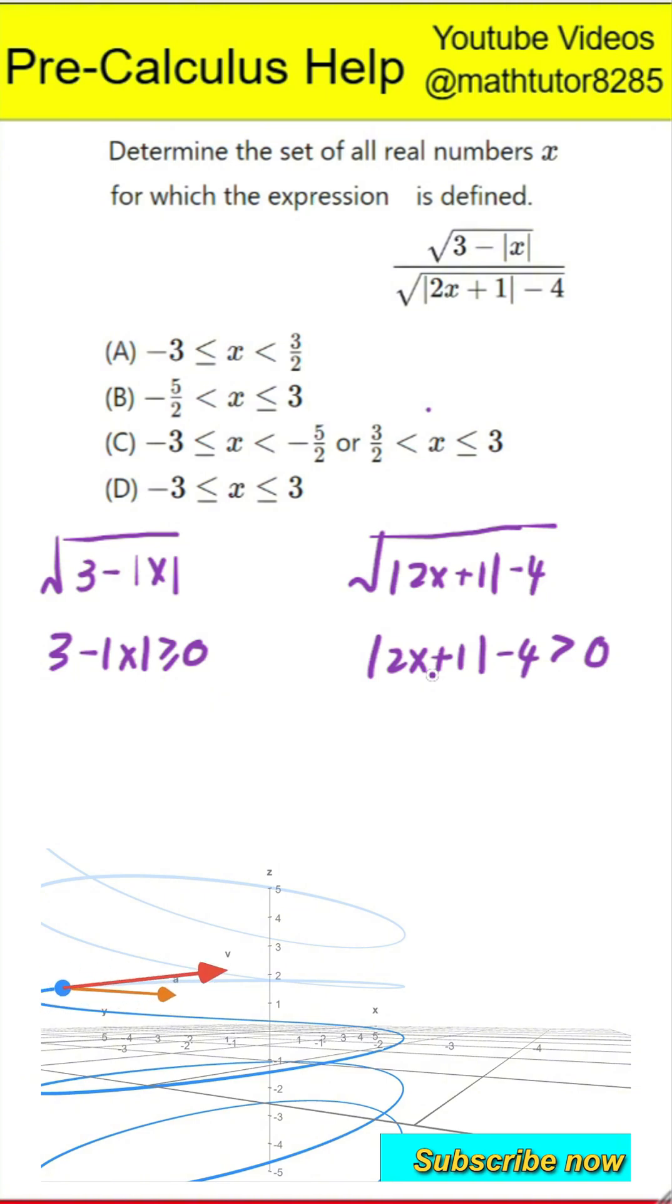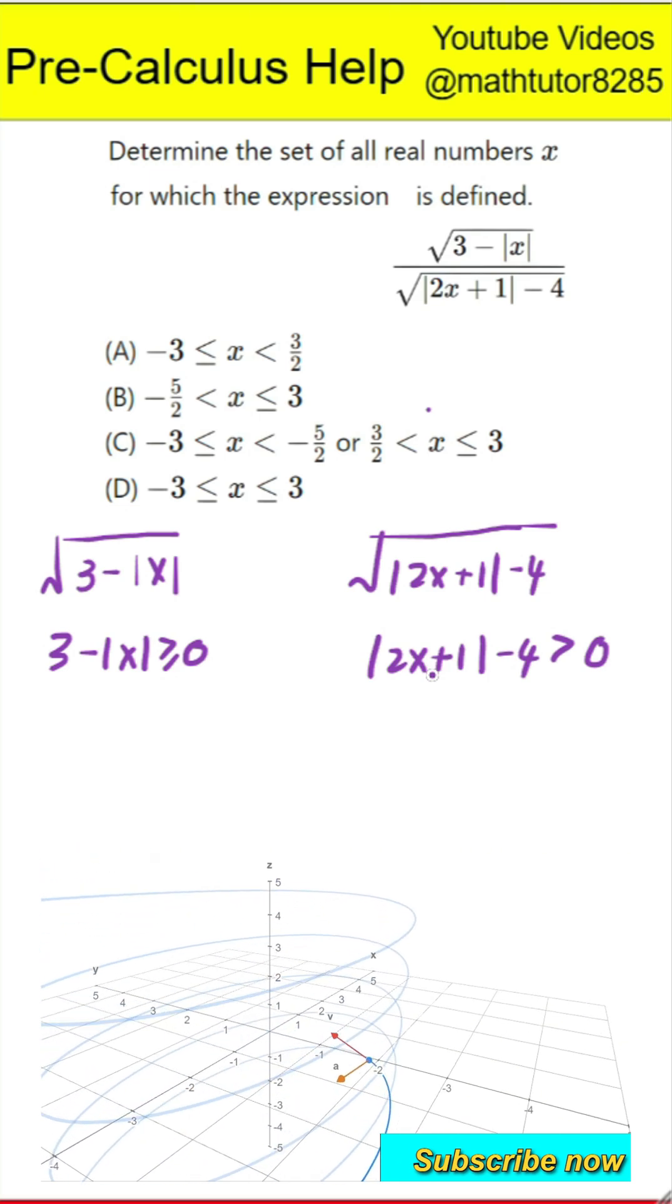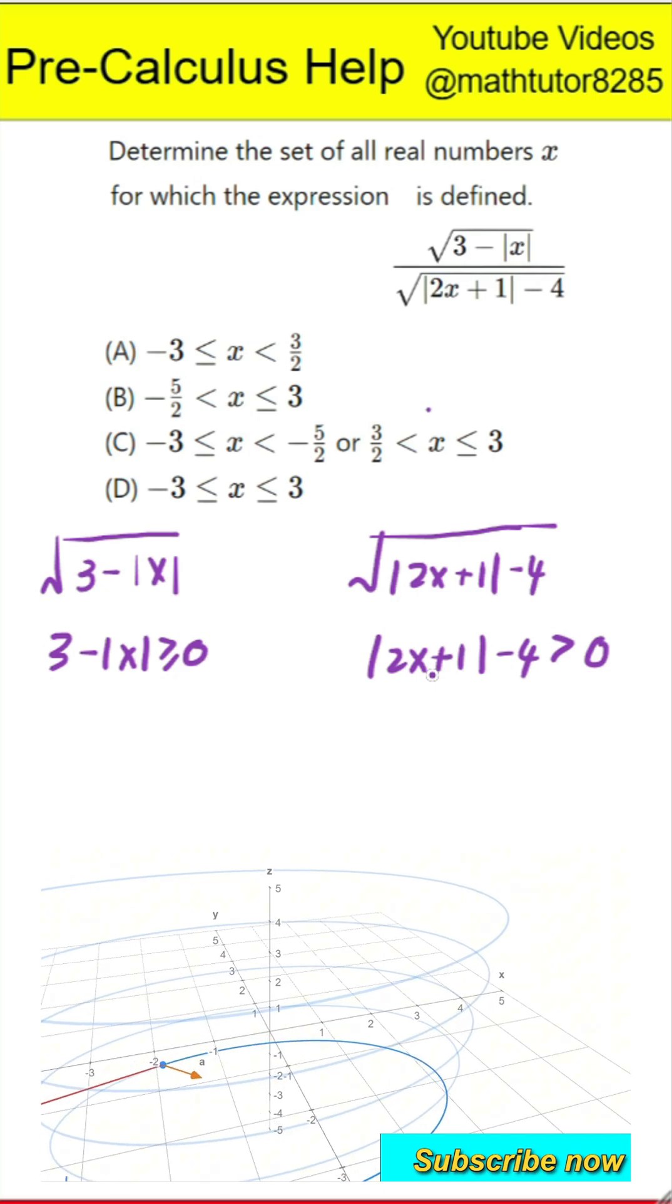Second, since the denominator is also under a square root and it's in the bottom of a fraction, we need the part under that square root to be strictly greater than 0. That part is the absolute value of 2 times x plus 1 minus 4. So the absolute value of 2x plus 1 must be greater than 4.